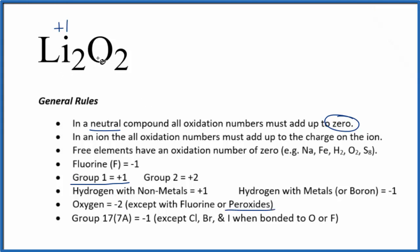So Li2O2, that's a peroxide. H2O2, Na2O2, those are peroxides. So we can't use this rule to figure out the oxidation number on the oxygen.